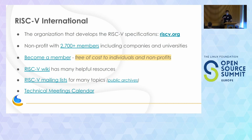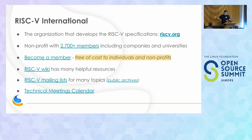RISC-V International — originally it started at Berkeley, but now the specifications are developed by RISC-V International at riscv.org. There are a lot of members including companies and universities. You as an individual or a nonprofit organization can join free of cost. A lot of the specifications and extensions are developed on mailing lists for different topic areas, and you can view the public archives there. Many working groups and special interest groups also have regular meetings, so there's a meetings calendar you can check out.